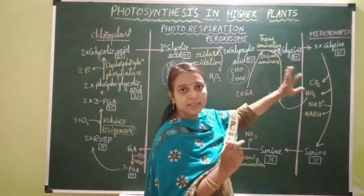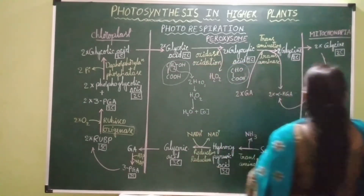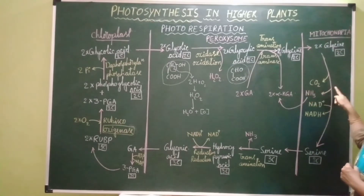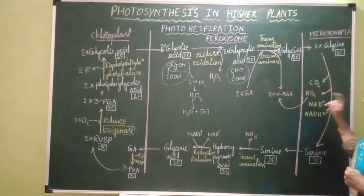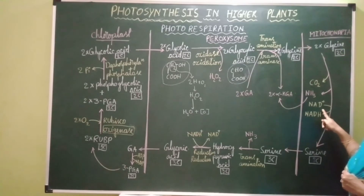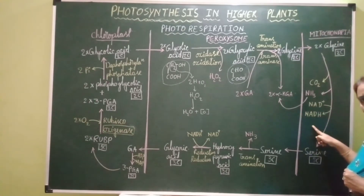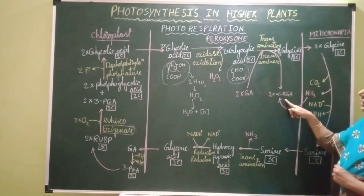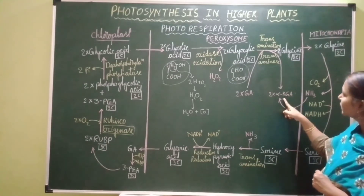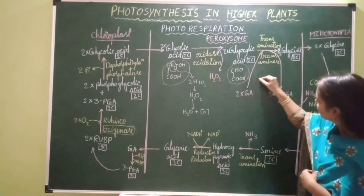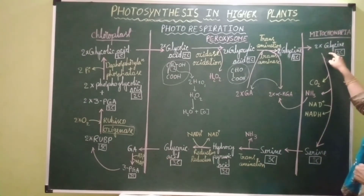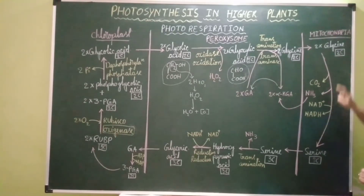This glycine leaves the peroxisome and enters the mitochondrion. Inside the mitochondrion, glycine undergoes decarboxylation, deamination, and oxidation. Decarboxylation releases one carbon dioxide; deamination releases one ammonia group; oxidation releases two protons and electrons, which are picked up by NAD⁺ to form NADH. The ammonia released is transferred to alpha-ketoglutaric acid in the peroxisome, converting it back into one molecule of glutamic acid. Two molecules of glycine (four carbons) lose one carbon as CO₂, forming one molecule of serine — a three-carbon amino acid.